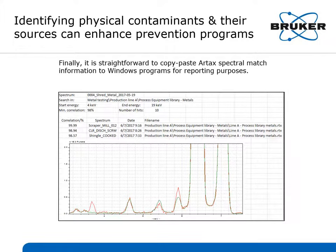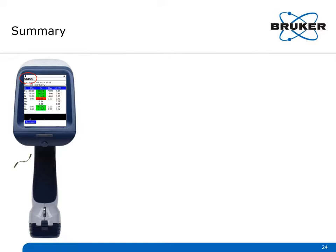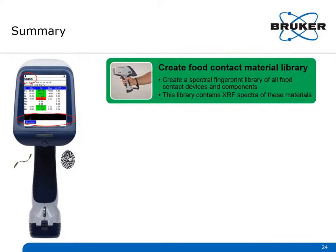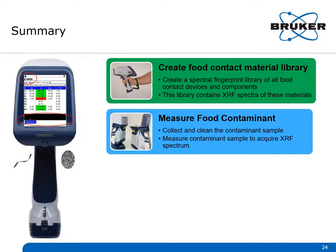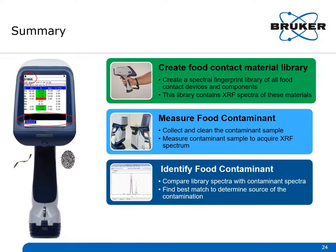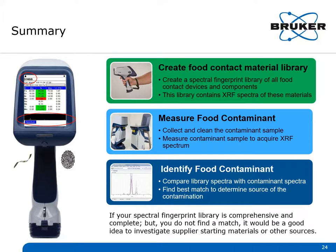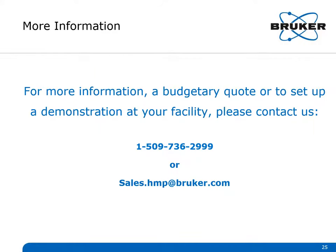It is straightforward to copy and paste RTAX spectral matching information to Windows programs for reporting — the top three matches are identified and listed with their correlation percentages, and you can customize this as needed. In summary, contaminant identification for food production is critical, and handheld XRF decreases the time required to ID and source physical contaminants. This video explained how to identify and source contaminants using spectral fingerprinting, which is more selective than the standard alloy grade ID method. The three primary stages are: create a food contact material library, measure the food contaminant, and identify the source using Bruker's RTAX spectral matching software. If your library is comprehensive but you don't find a match, inspect supplier starting materials or other sources. Thank you for your interest in Bruker's solutions for food safety and quality.